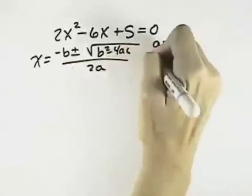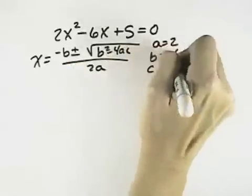Where a is the coefficient in front of x squared, b is the coefficient in front of x, and c is the last constant.